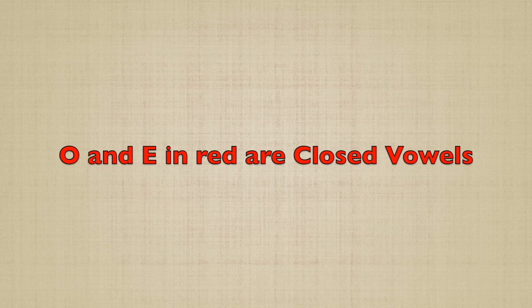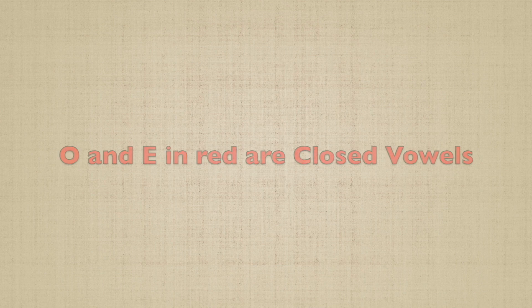The red letters in the text are closed vowels and should be pronounced as follows: O, E, O, E.